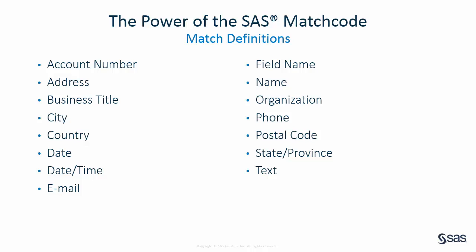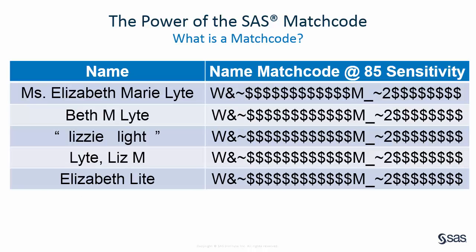You can edit existing match definitions in the SAS Quality Knowledge Base or create custom match definitions to generate match codes to facilitate the fuzzy matching of other types of data. For example, you could create a match definition to generate match codes for your product names. A SAS match code represents the character content of an input string. If two input strings generate the same match code, then those two strings are intended to represent the same entity. Therefore, match codes are used to facilitate the fuzzy matching of data.